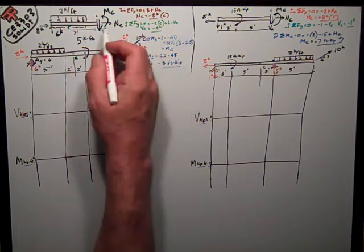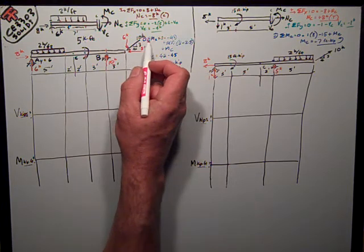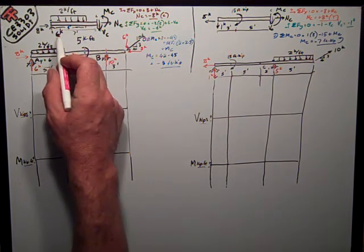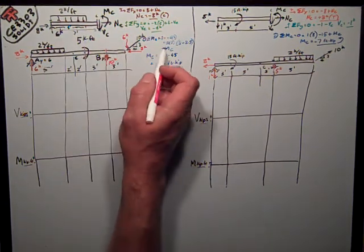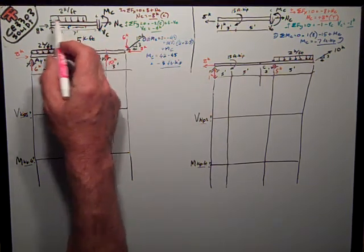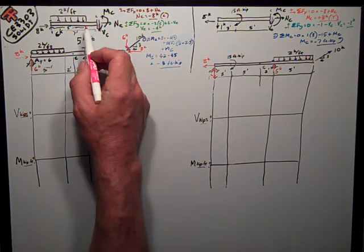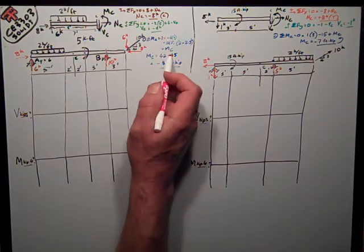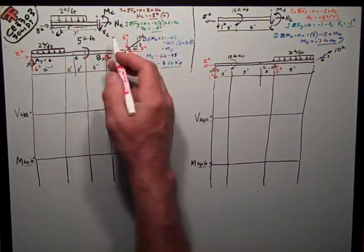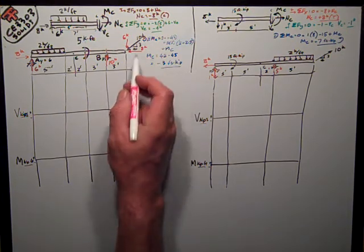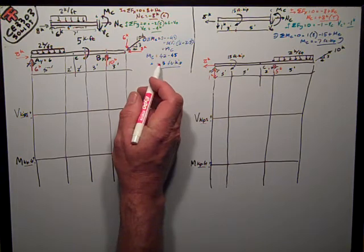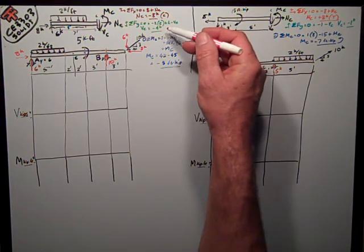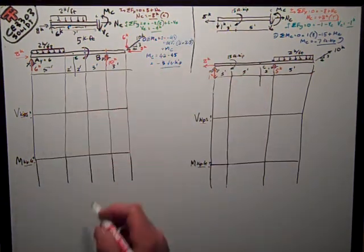Finally, the sum of moments at C — I've assumed positive counterclockwise equals zero. I've got negative six times seven for the support load times its seven-foot moment arm, plus two kips per foot times five feet times the distance of two feet plus two-and-a-half feet to the center of that rectangle, plus MC, which is positive because it's in the same direction as my sign assumption. Working out the math, MC is equal to 42 minus 45, or negative three foot-kips. The great thing about doing a shear and moment diagram is I get to check these numbers.